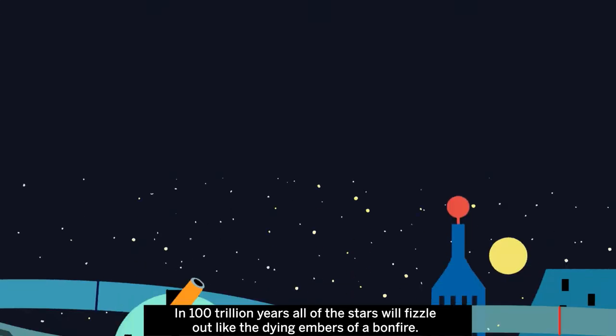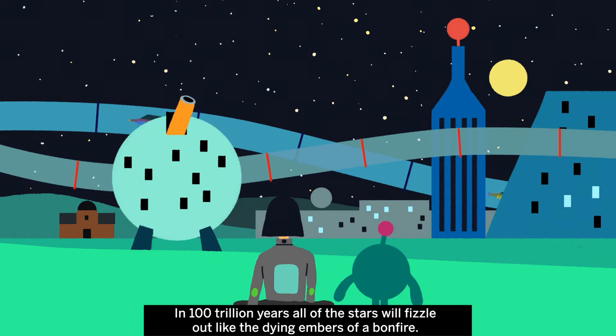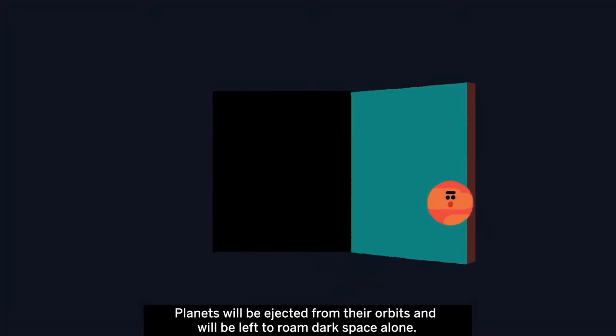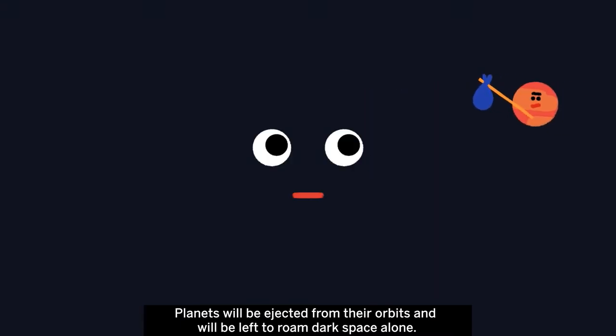In 100 trillion years, all of the stars will fizzle out like the dying embers of a bonfire. Planets will be ejected from their orbits and will be left to roam dark space alone.